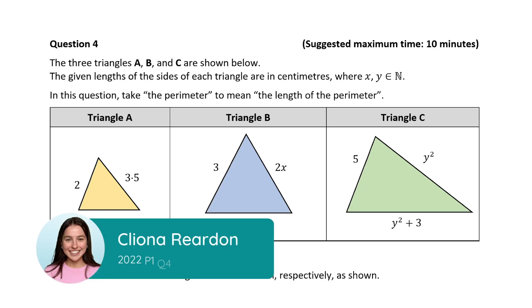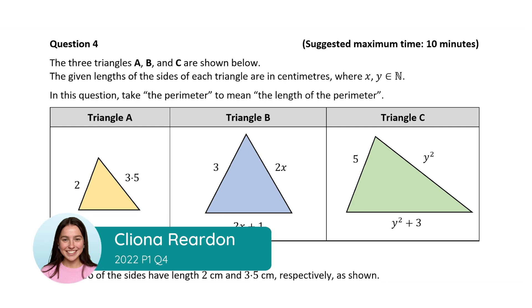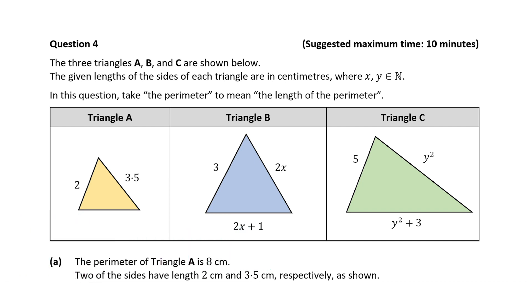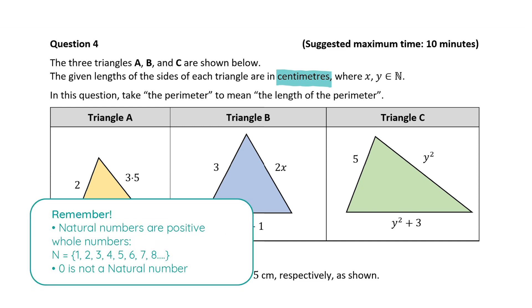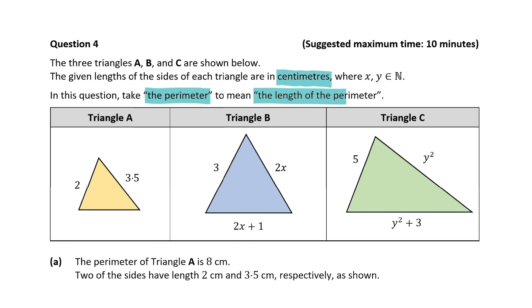Hi everyone and welcome to this video. Clena here and today I'm going to be taking you through the solution to question 4 from this junior cert higher level paper. So let's get right into it. So we're given three triangles A, B and C and we're told that the given lengths of the sides in each triangle are in centimeters where X and Y are both natural numbers.